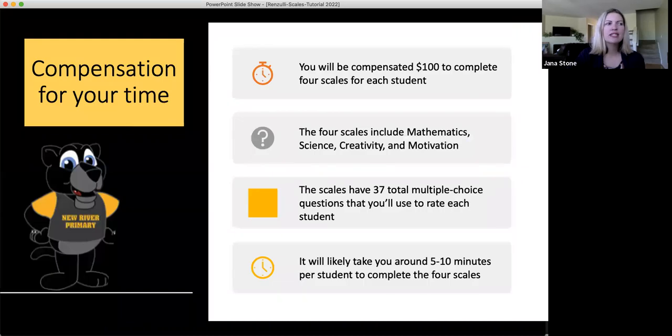So let's start with compensation. You will be compensated $100 to complete four scales for each student in your classroom. The four scales include mathematics, science, creativity, and motivation. The scales have 37 total multiple choice questions that you'll use to rate each student. It will take you around 5 to 10 minutes per student to complete the four scales.